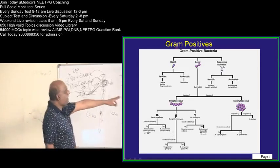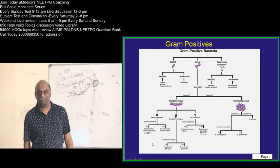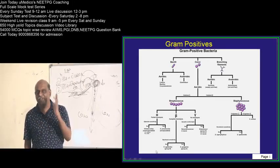Once more, alpha hemolytic, you will differentiate with optochin sensitivity. Alpha, optochin, both are O, easy to remember.